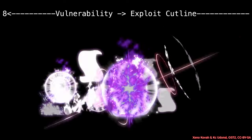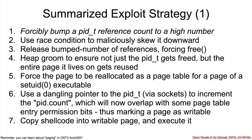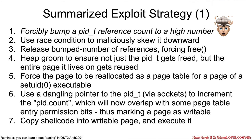All right, and I happen to have one of those animations chopping through some pages, which is going to be super relevant later. Let's get right to it, because this is going to be a long one. So what is the summarization of the exploit strategy? Well, the first and in my opinion the most important step is to forcibly bump the PID-T reference count to a higher number. When I saw that, I had my mind blown, because all of a sudden it made total sense exactly how the attacker would control the use-after-free and make it occur only when it was advantageous for them.